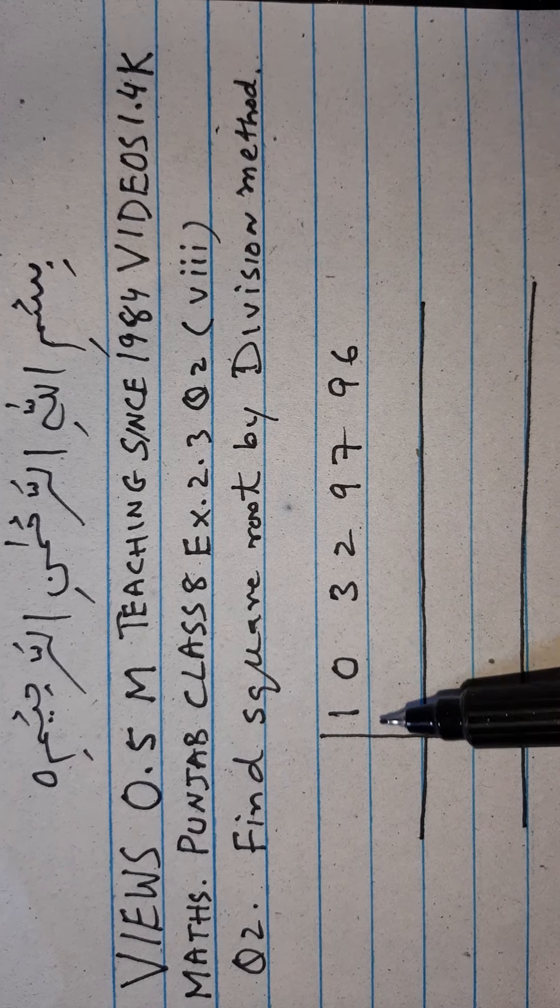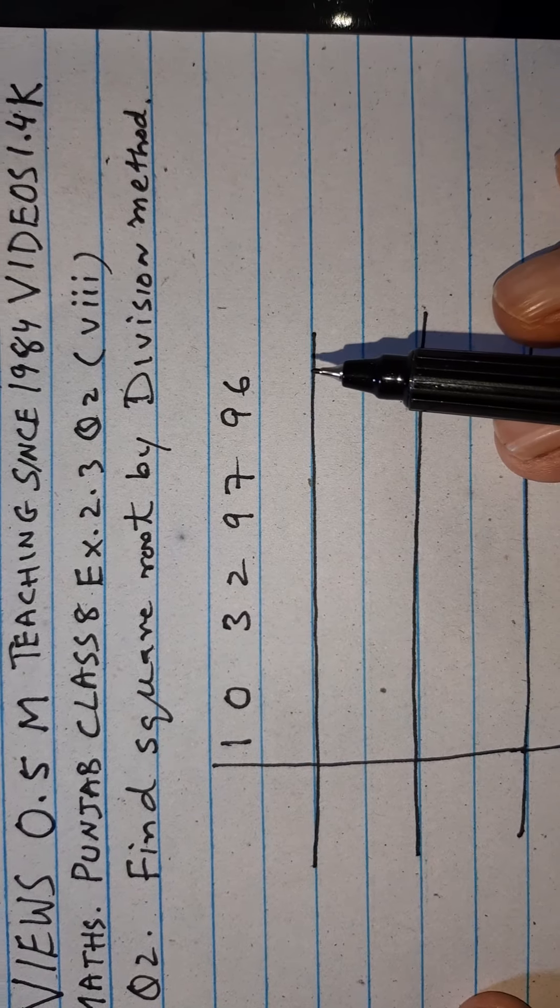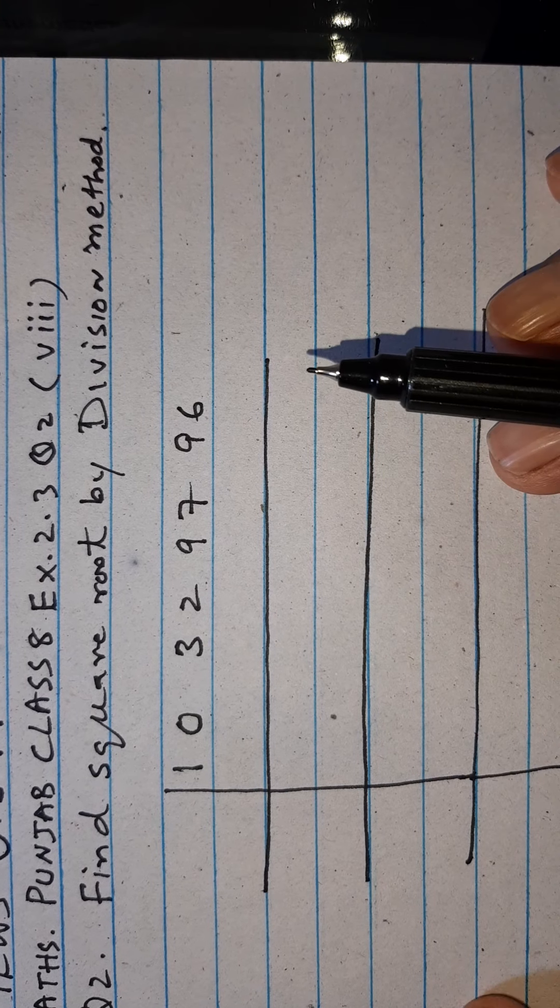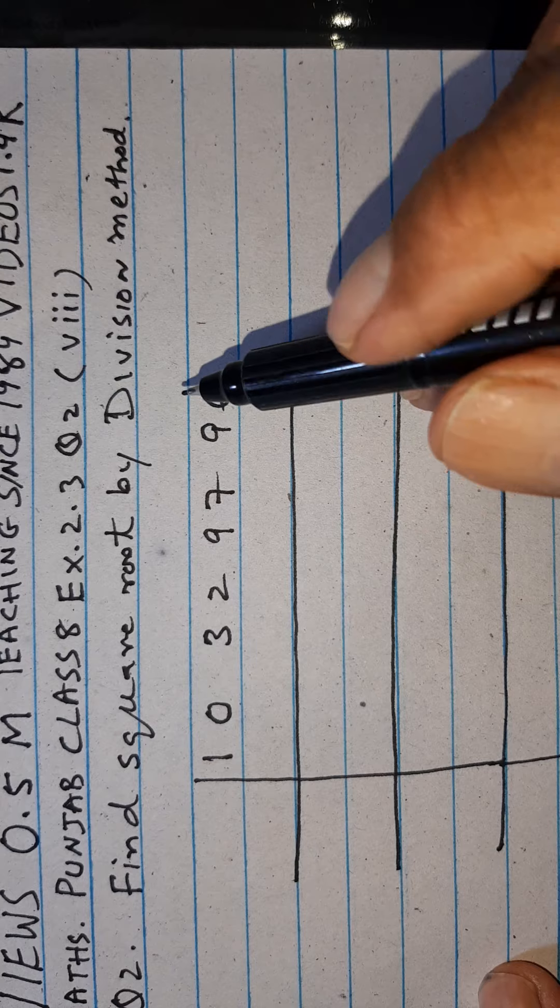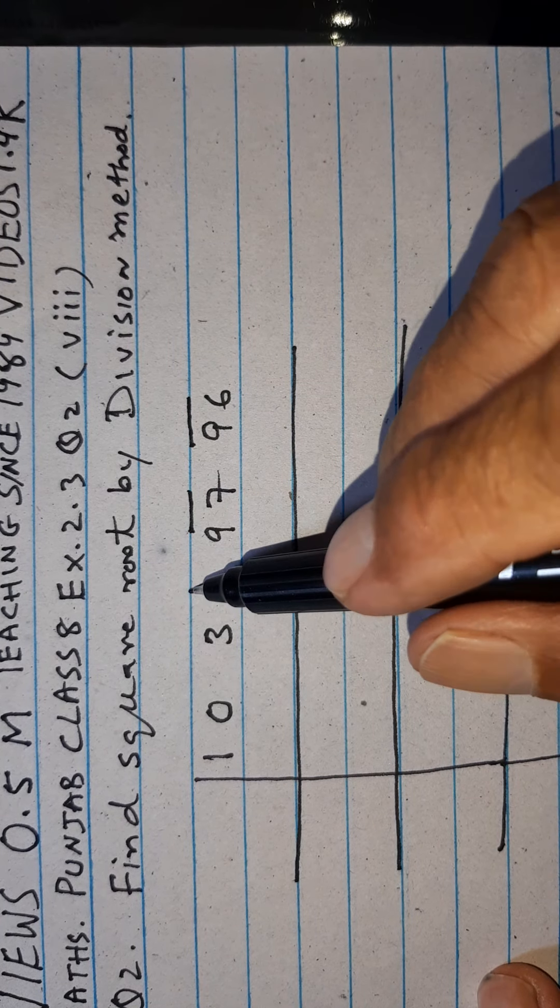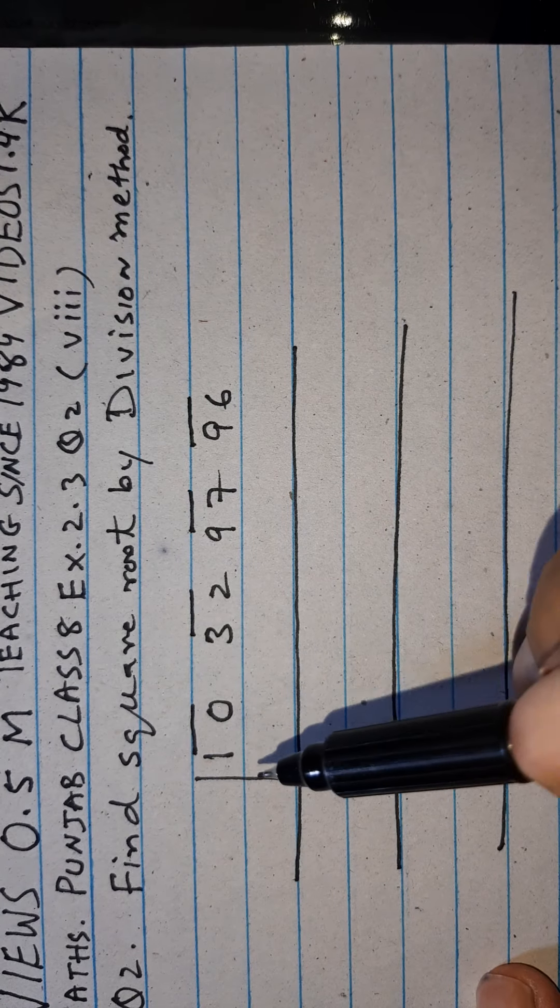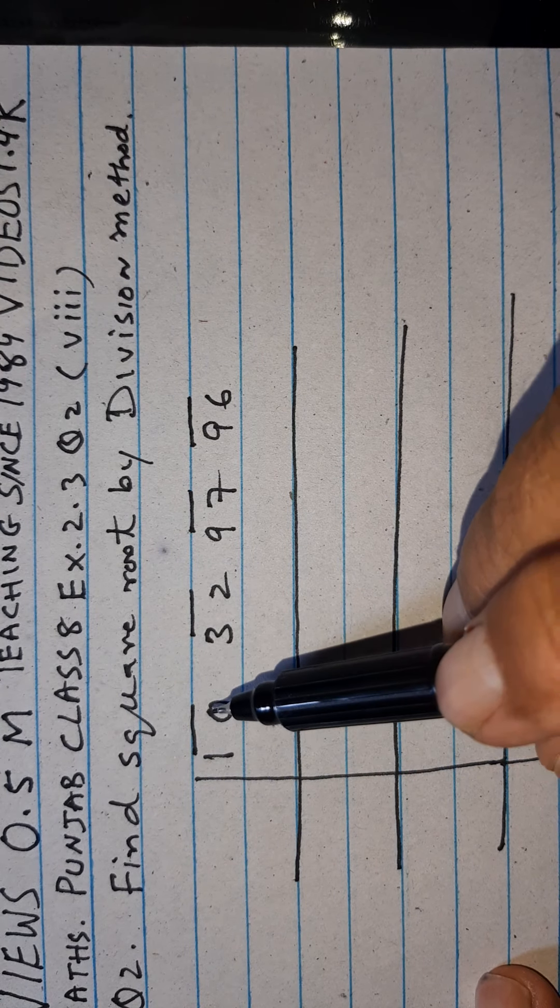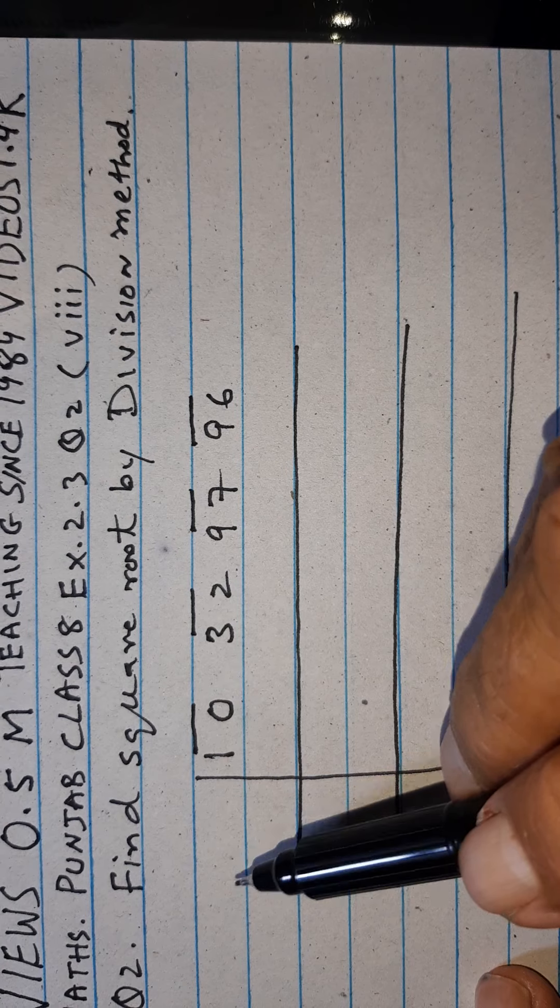Bismillahirrahmanirrahim. Today we have to find out the square root of this number by division method. We make the pair from the right side, pair of two. This is one pair, second pair, third pair, fourth pair. And here this is 10.